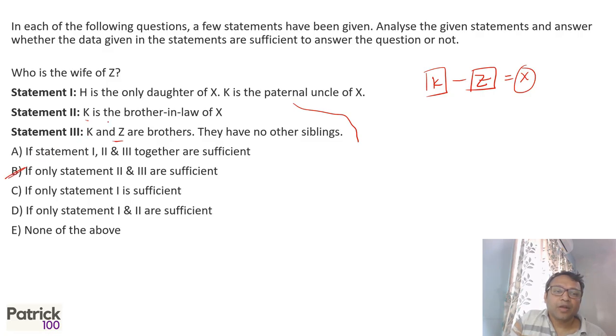The first statement, H is the only daughter of X, and K is the paternal uncle of X, doesn't give you any information as such. That gives a relationship not linked to what is given there. So from the second and third you get the answer. The answer will be the second and third statement.